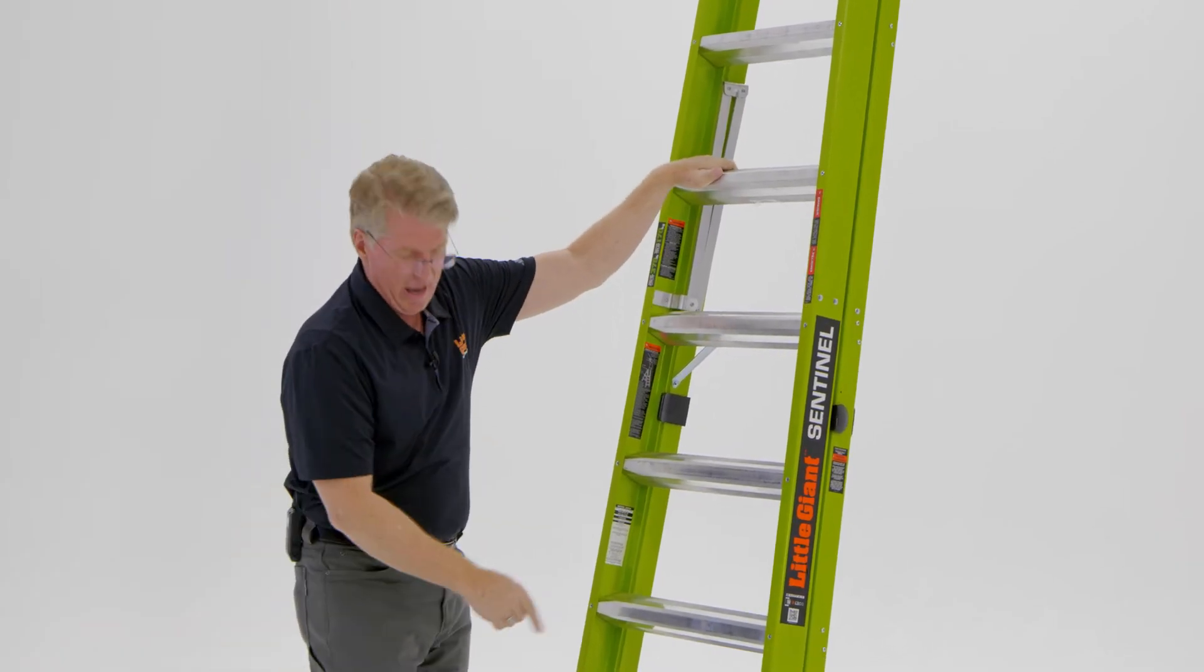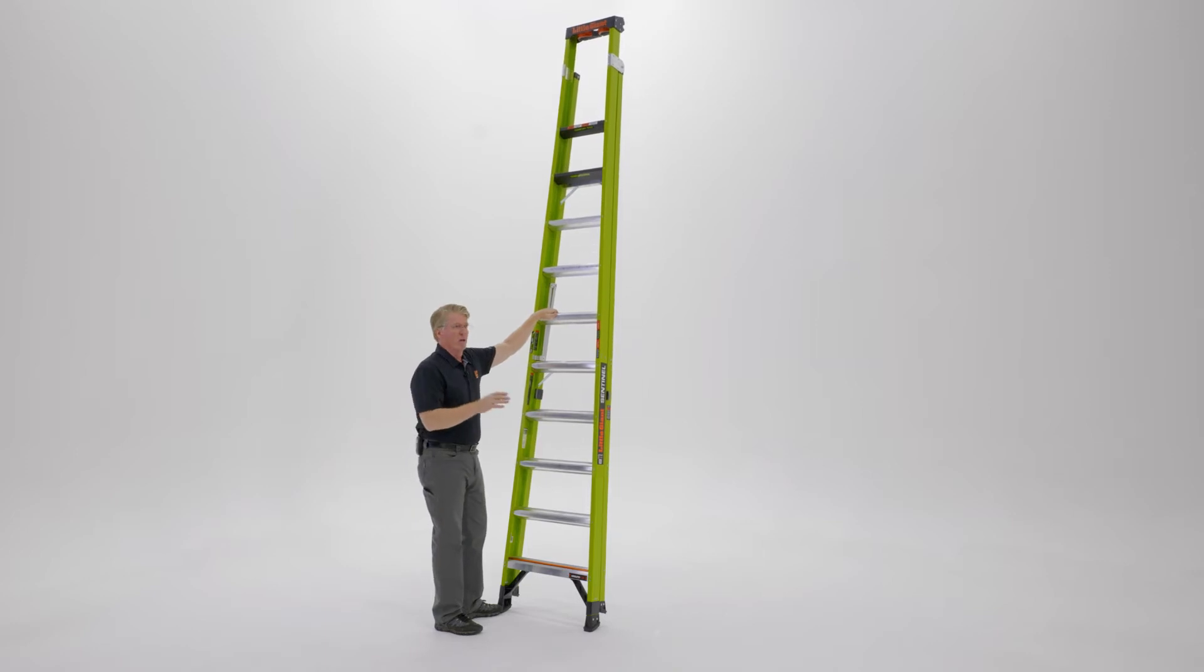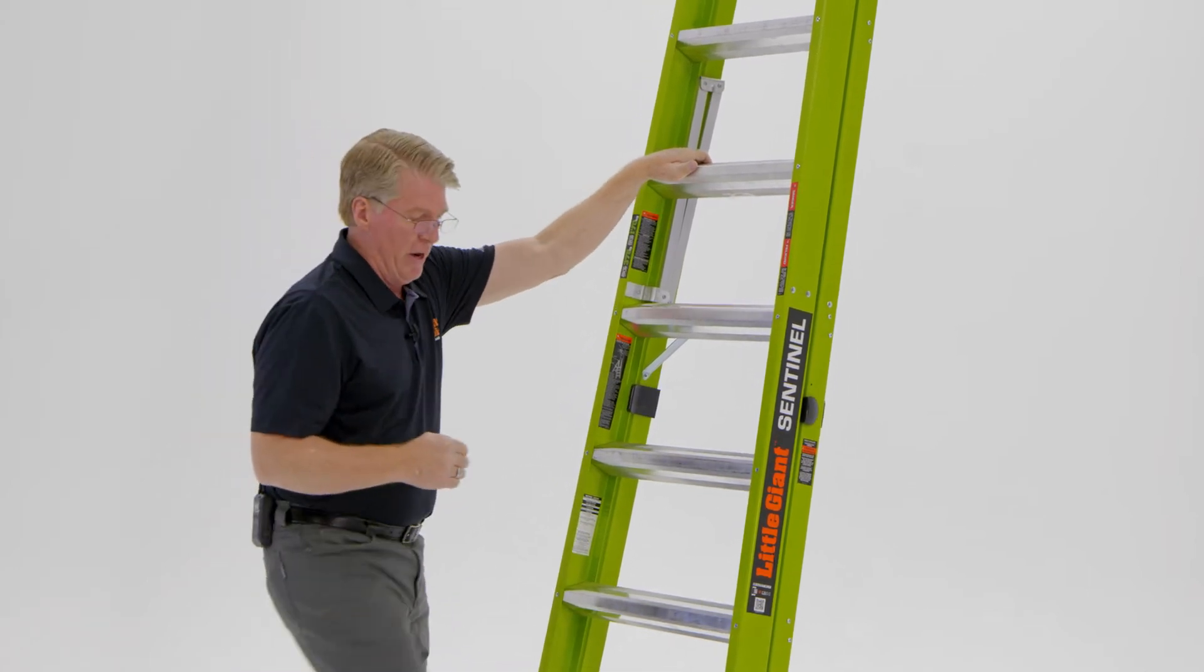At the bottom of the ladder, we have the ground cue. Such a high percentage of ladder falls happen because people step off early. The ground cue makes a noise and vibrates when you step on it.